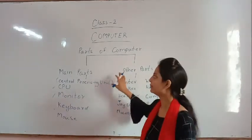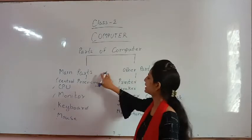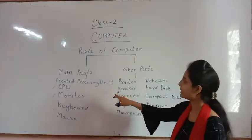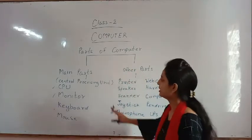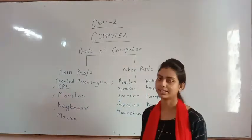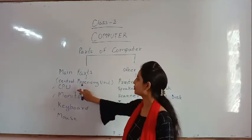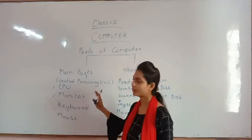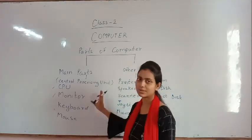Now let me revise once more. Parts of a computer have two categories: main parts and other parts. In main parts, there are only four: CPU, which is also known as Central Processing Unit and the brain of the computer; monitor; keyboard; and mouse. These four are the main parts.